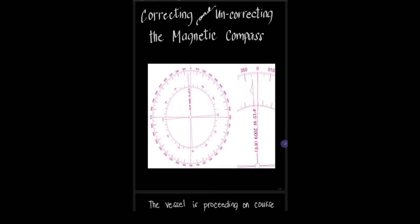Good day! In our previous discussion, we talked about the compass error, which is the algebraic sum of variation and deviation, and it can also be measured from true north to the compass north. For this week's topic, we're going to learn how to correct and uncorrect the magnetic compass.